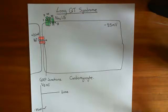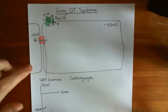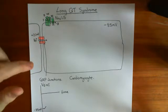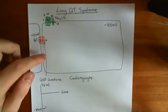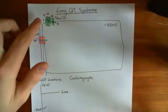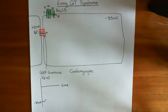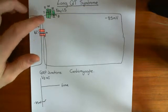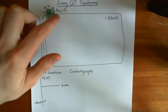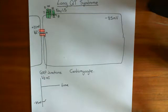Welcome to part two of this video on long QT syndrome. In the previous video, we saw that an action potential occurring on the membrane of a neighboring cardiomyocyte is going to induce a slight depolarization of the membrane potential across this cardiomyocyte, and that slight depolarization will lead to the opening of voltage-gated sodium channels. The alpha subunit of this voltage-gated sodium channel is coded for by the gene NAV1.5, which is the voltage-gated sodium channel found in cardiomyocytes.